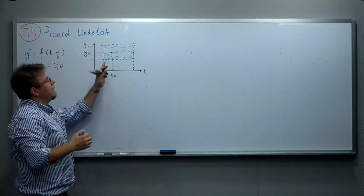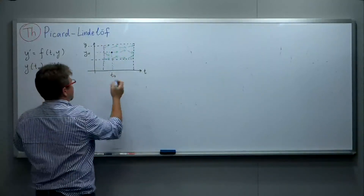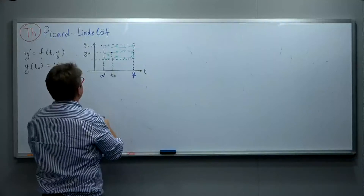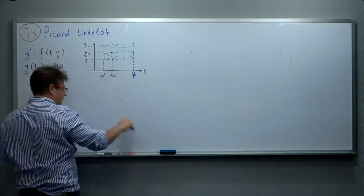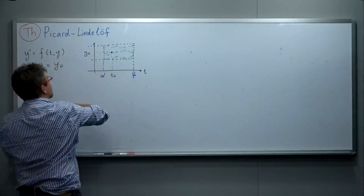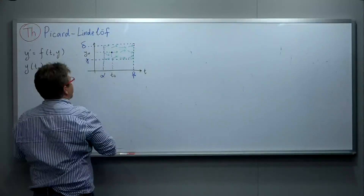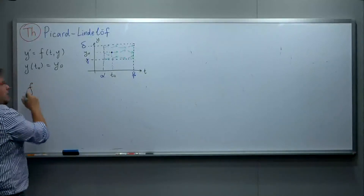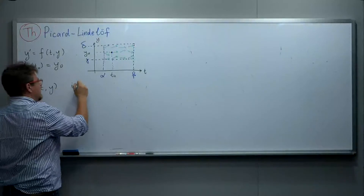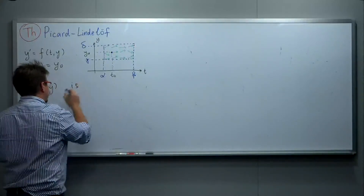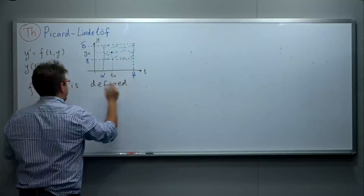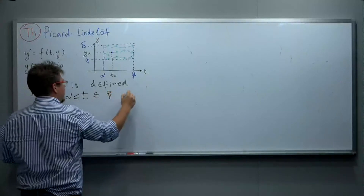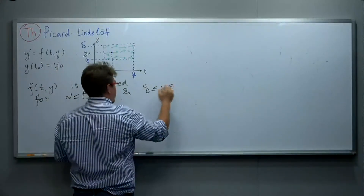This means we can visualize it as a vector field. We assume f is defined for values of t between α and β, and for values of y between γ and δ. So we are assuming that the right-hand side f(t, y) is defined for t ∈ (α, β) and y ∈ (γ, δ).